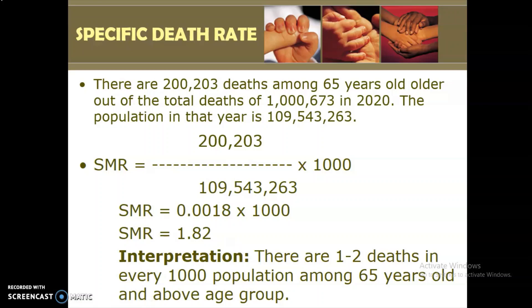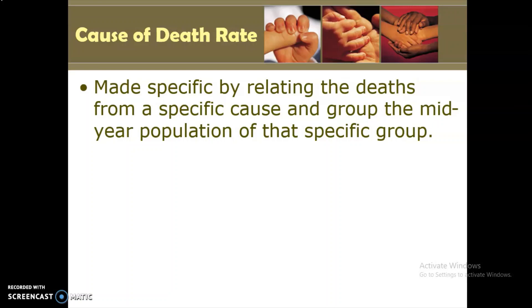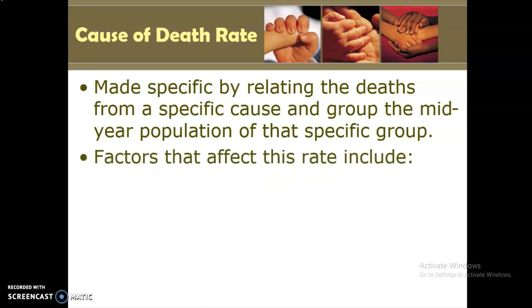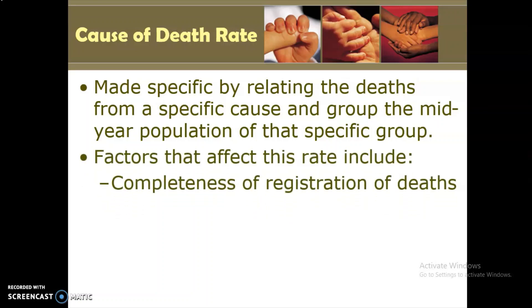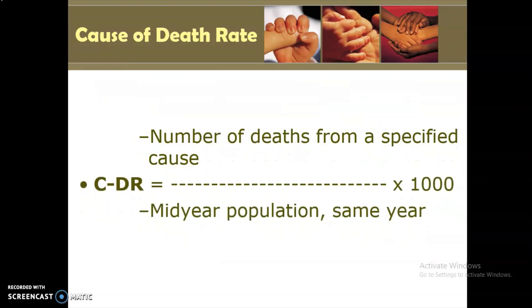The cause of death rate is made specific by relating deaths from a particular cause — for example, cardiovascular disorder, COVID-19, or tuberculosis — to a specific group. Factors that affect these rates include: completeness of death registration, composition of the population, and the disease ascertainment level in the community. These three factors can affect the result of the cause of death rate.